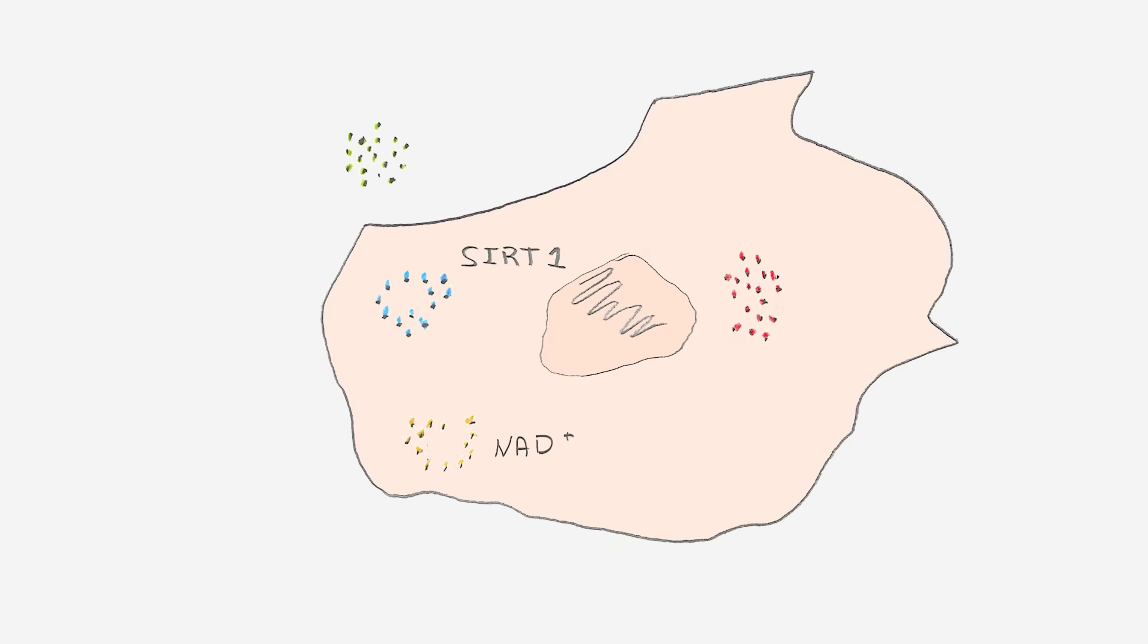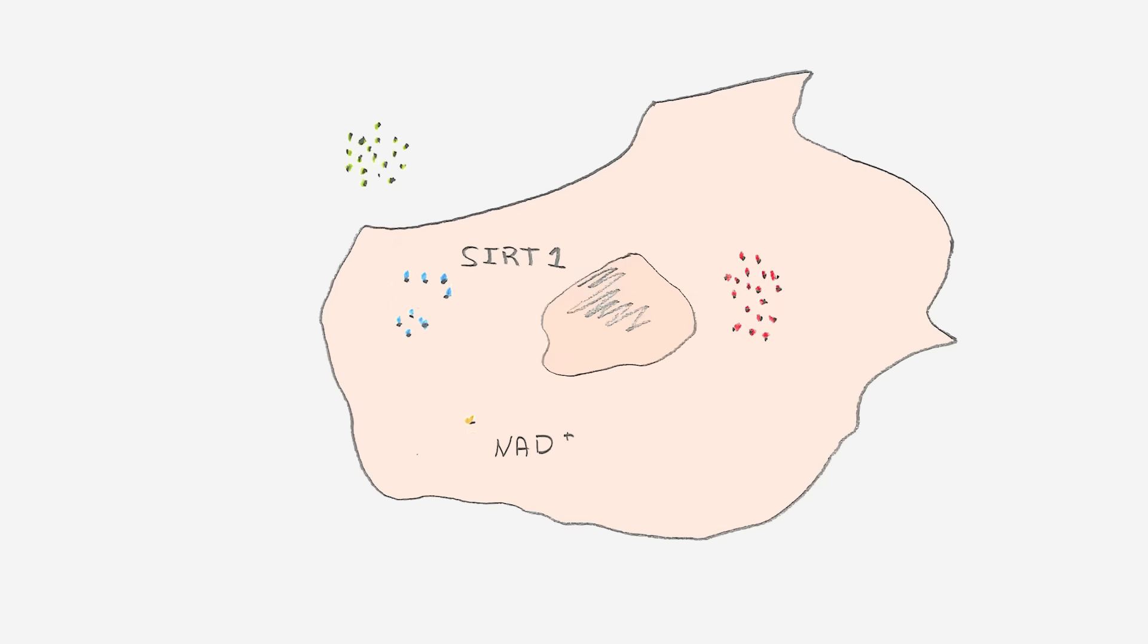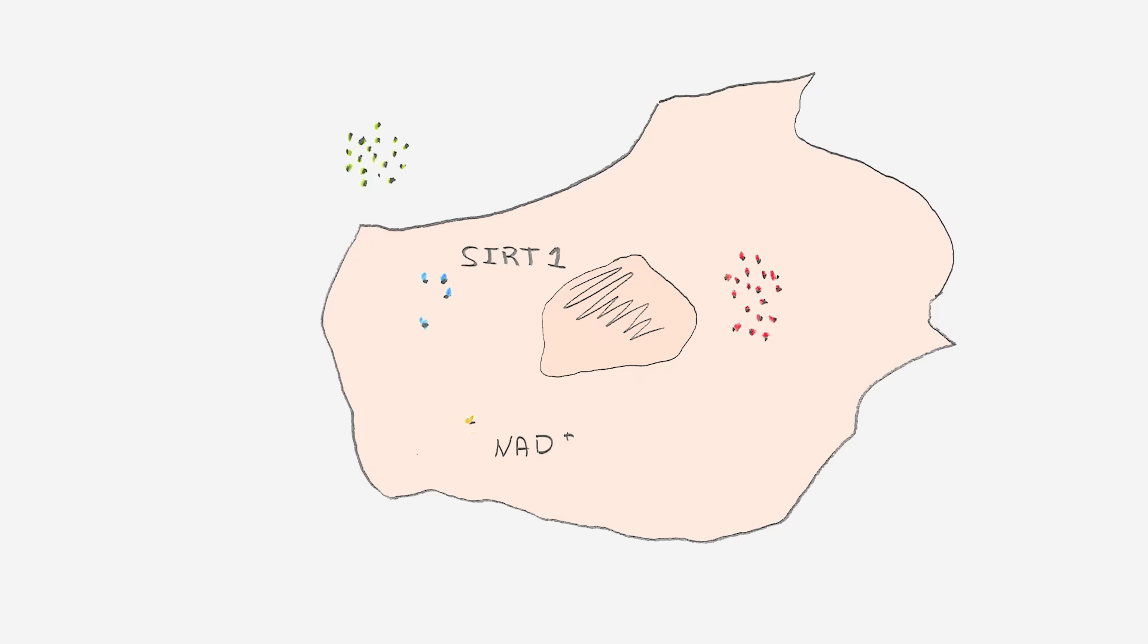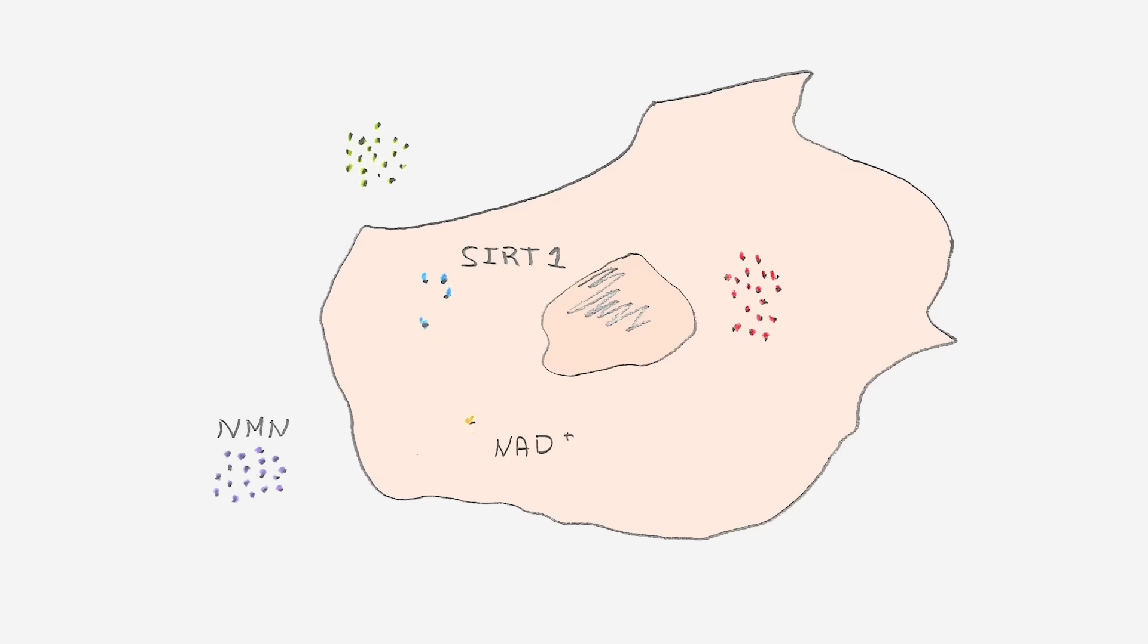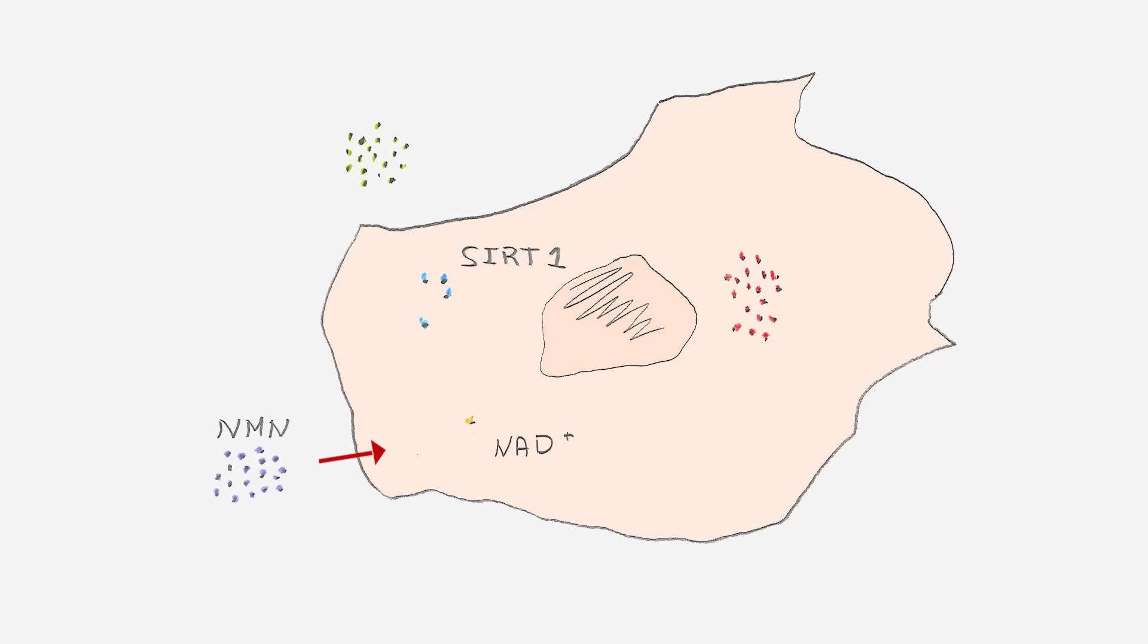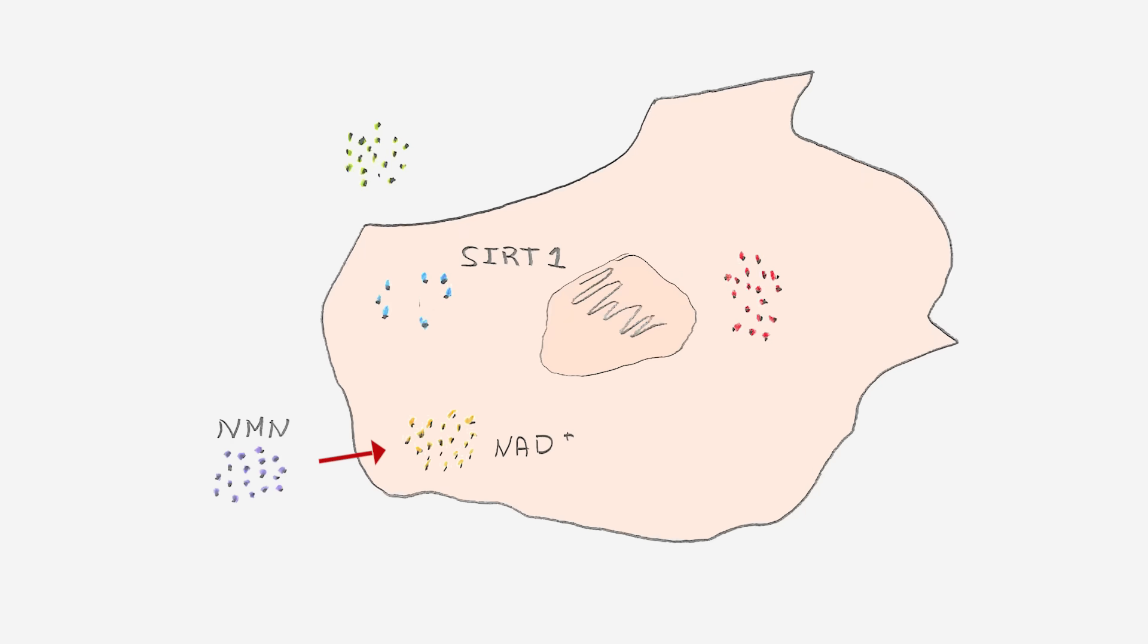But both NAD and SIRT1 decline as we age. They can no longer perform their role as the interface between the muscles and blood vessels. In our new study, we gave mice NMN, a chemical compound commonly found in the body and previously shown to boost NAD levels, which in turn boosts SIRT1.